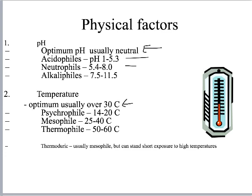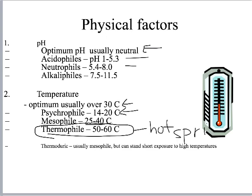For temperature, the optimum is usually around body temperature — about 35 to 37 degrees Celsius. A psychrophile grows between 14 and 20°C, a mesophile is between 25 and 40°C, and a thermophile likes high temperatures. Examples of thermophiles come from hot springs, where bacteria thrive in the high-temperature environment.